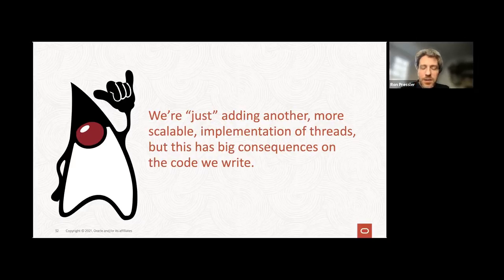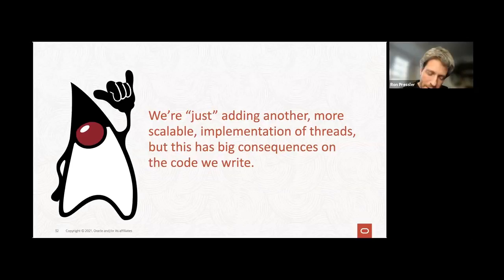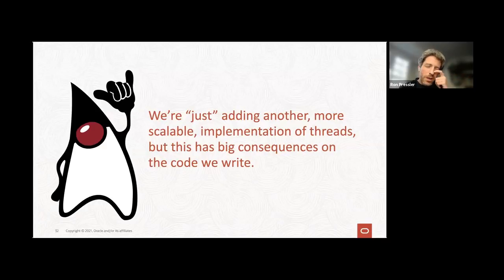One thing you need to unlearn is using thread pools. There is never, ever a need to pool virtual threads. If you're pooling virtual threads, you're doing it wrong. You can use executors, but it's better to use an executor that creates a new thread for every task, because creating new threads is essentially free. Even though the abstraction is the same, people need to get used to thinking about it differently. For example, if you have an incoming request and need to make 20 outgoing HTTP client calls to 20 microservices concurrently, just spawn 20 new threads to do those calls on your behalf.